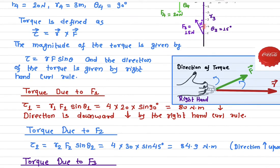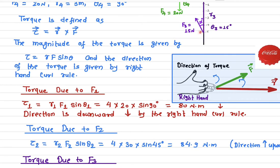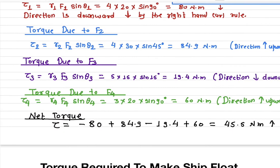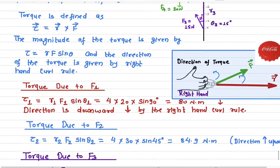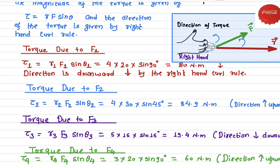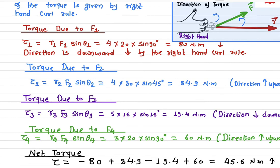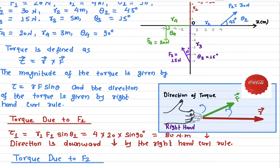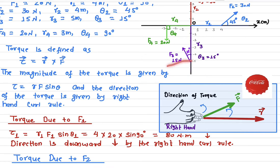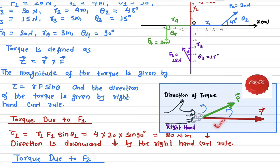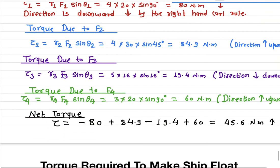For F3, the force is 15 newtons. The angle between the position vector and the force is 15 degrees (since 90° − 75° = 15°). So the torque is r3·F3·sin(θ3): r3 is 5, force is 15 newtons, sin(15°) gives a magnitude of 19.4 newton-meters. For the direction: if you apply a force here, it will make the cap move in the downward direction. Using the right-hand rule confirms the direction is downward, into the paper.